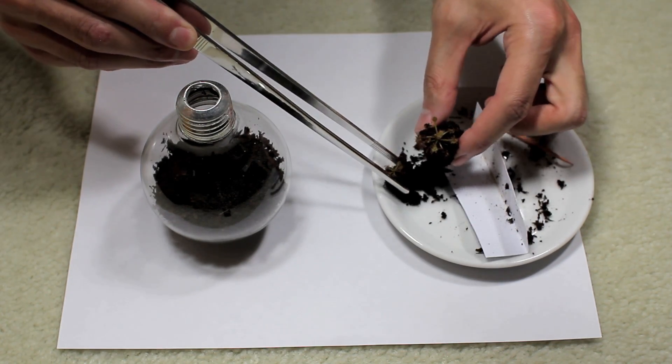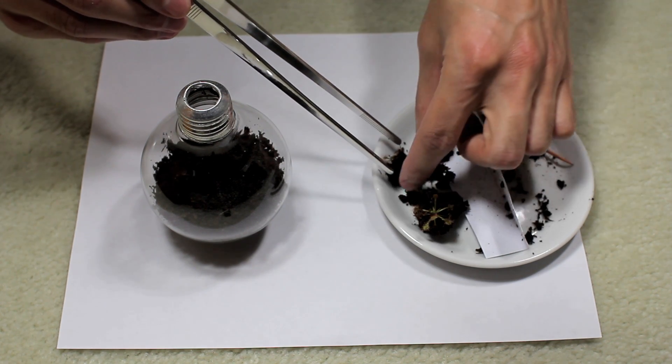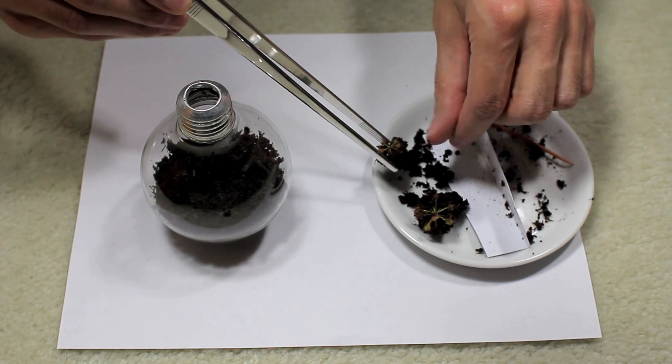Using the tweezers, you can then insert the plant inside the bulb. I chose the smaller of the two sundews shown, since the tweezers I am using are a little bit too large.